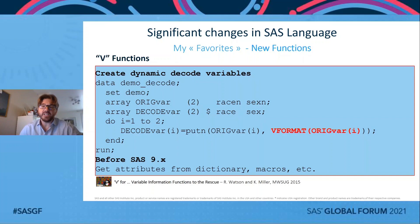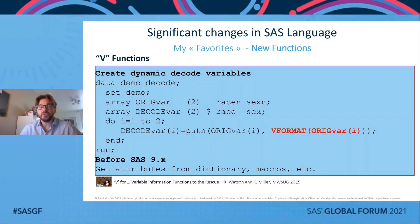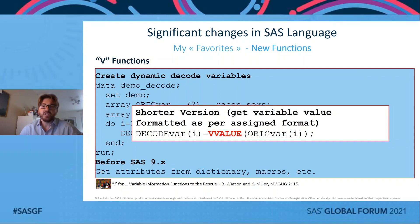The V function allows the programmer to query variable attributes within the data step without having to hard-code information or without having to do a preliminary step to incorporate data from PROC CONTENTS. In the example in this slide, assume you have some variables with an assigned user format to denote the meaning of numeric codes. You can automatically create, using an array, a set of variables containing the decoded version by dynamically querying the format attribute using the VFORMAT function. The following is a shorter version using another V function, VVALUE, that returns the value of the variable as per the associated format.